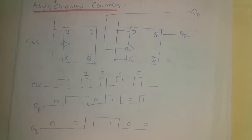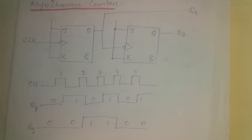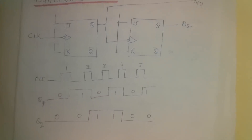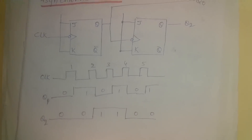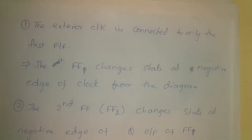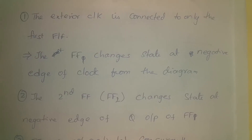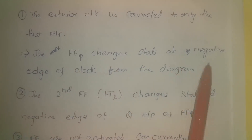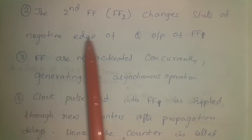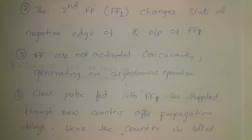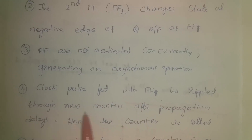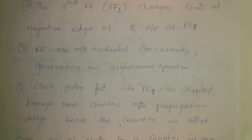This is also called a ripple counter because the output ripples through all the flip-flops at each clock transition. The external clock is connected only to the first flip-flop; the first flip-flop changes state at the negative edge of the clock pulse, and that is rippled through all subsequent flip-flops after propagation delays — hence it is called an asynchronous ripple counter.